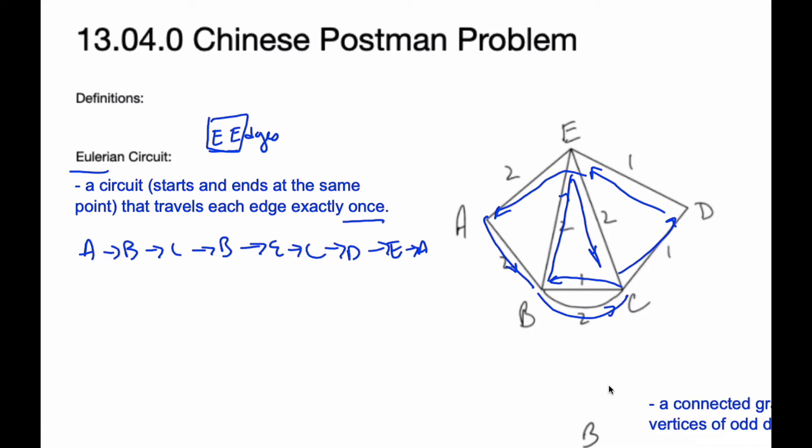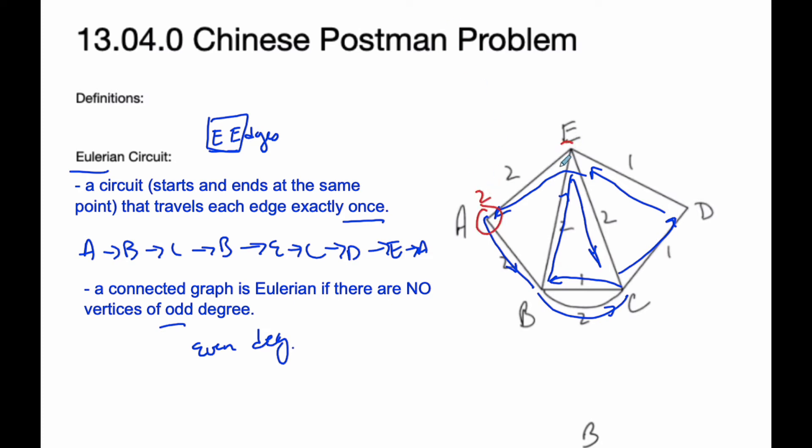Okay, and so along with that, I know a connected graph is Eulerian if there are no vertices that are odd. So I need all even, I need even degrees is what I need. So if I look at this diagram here, I can see the degree here is 2, degree here is 4, 2, 4, and 4. And so they're all even, so therefore this graph is Eulerian.